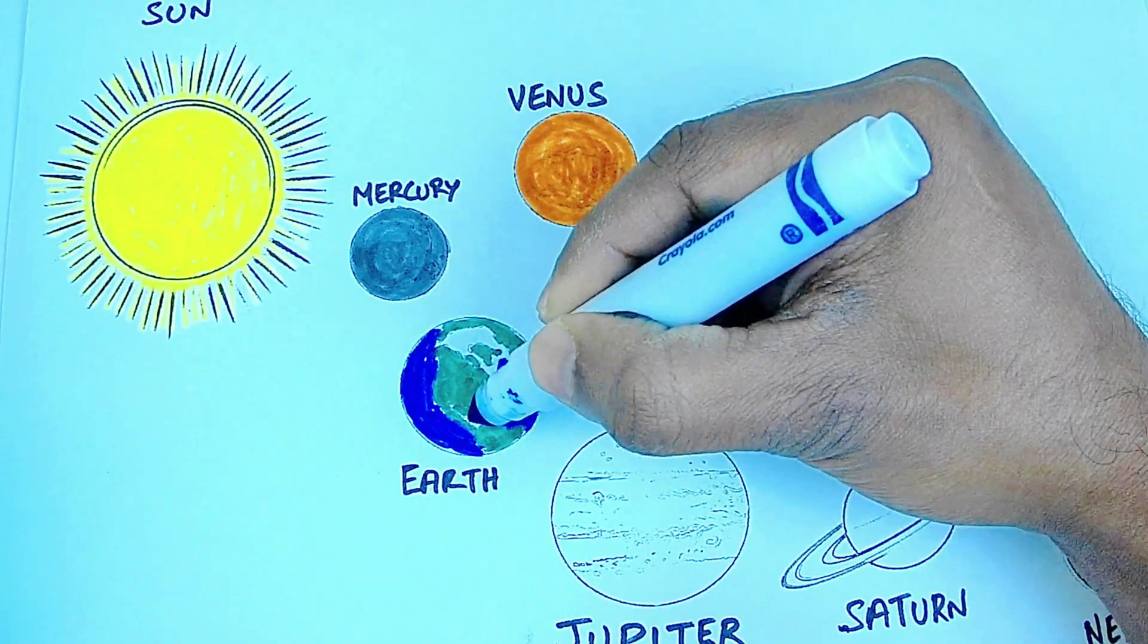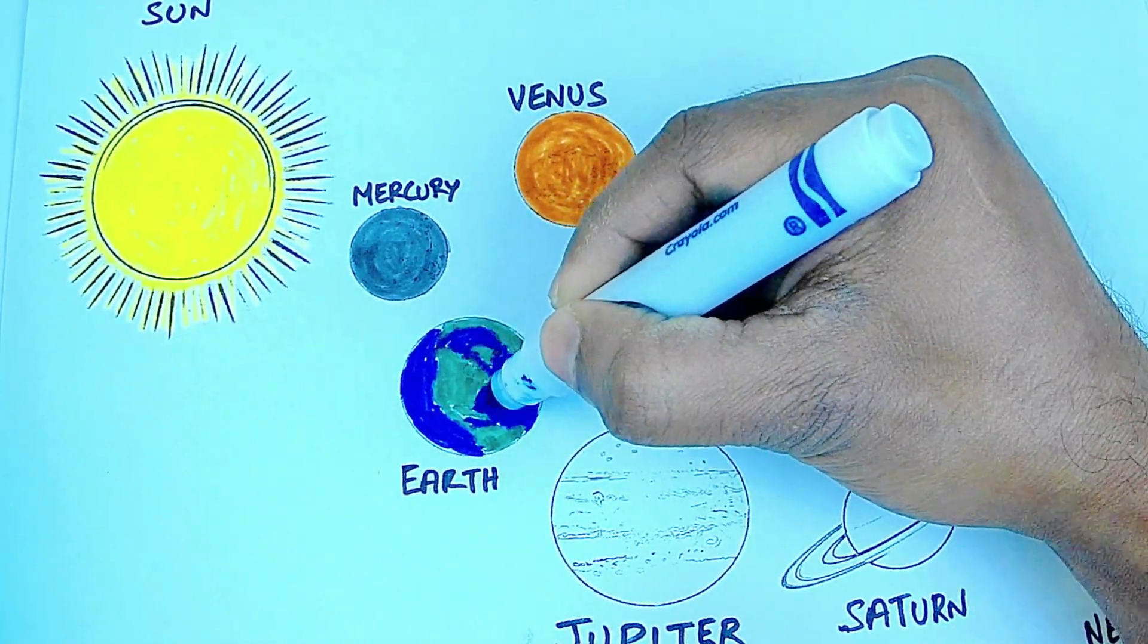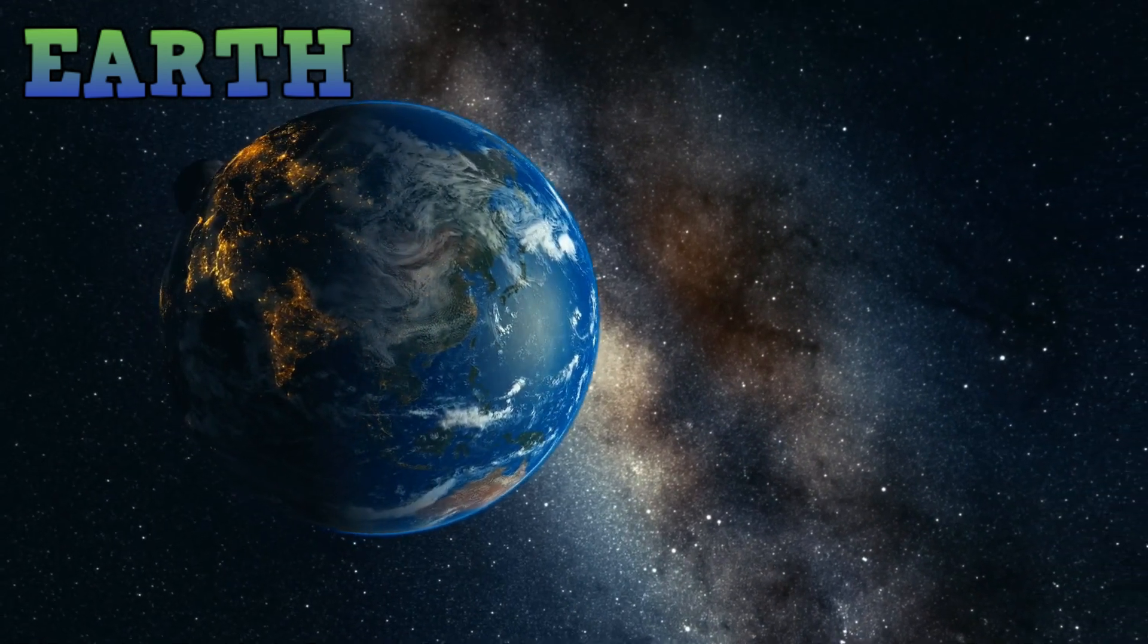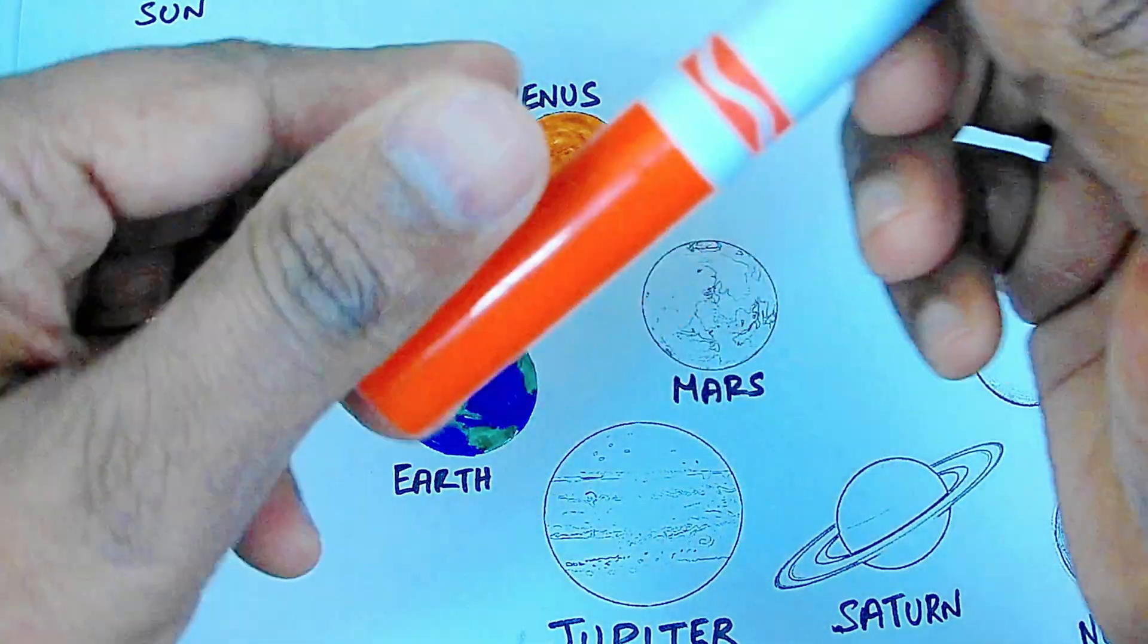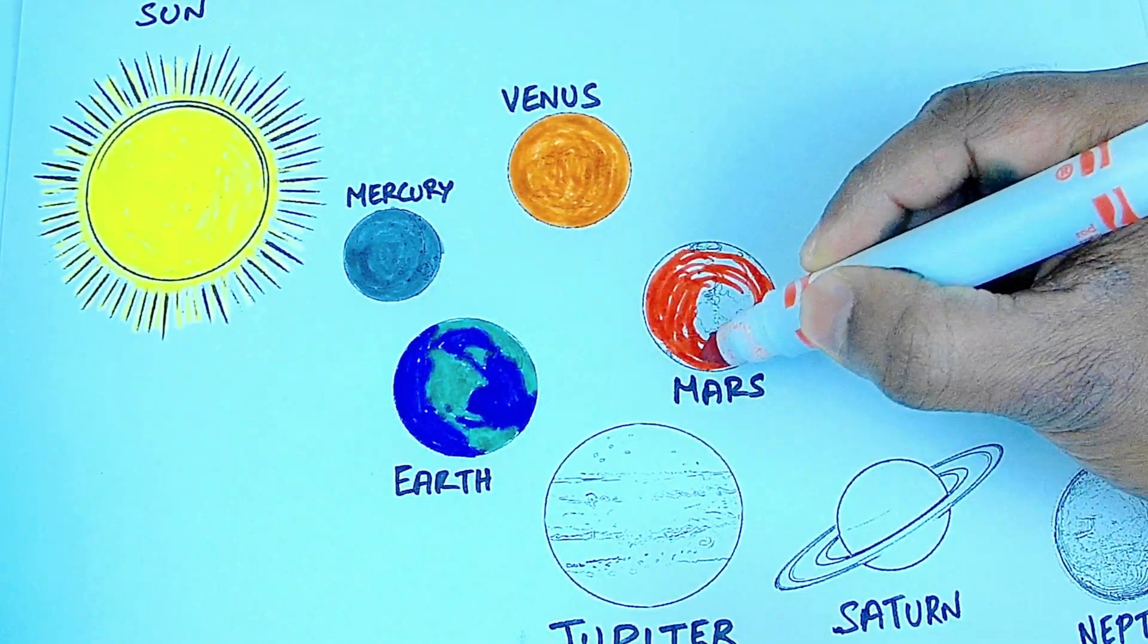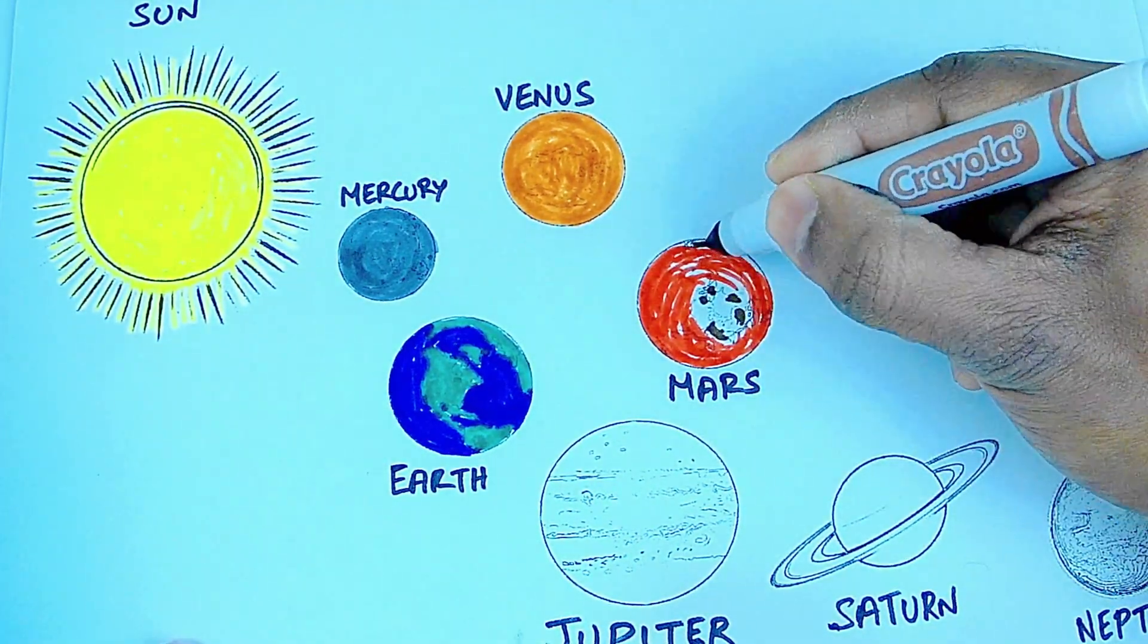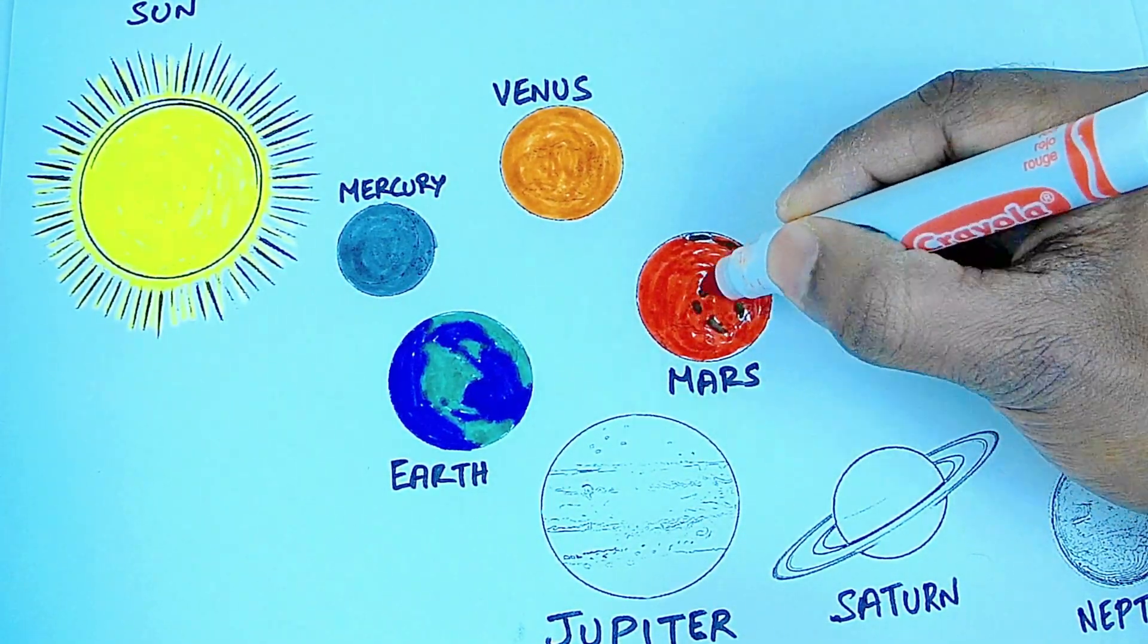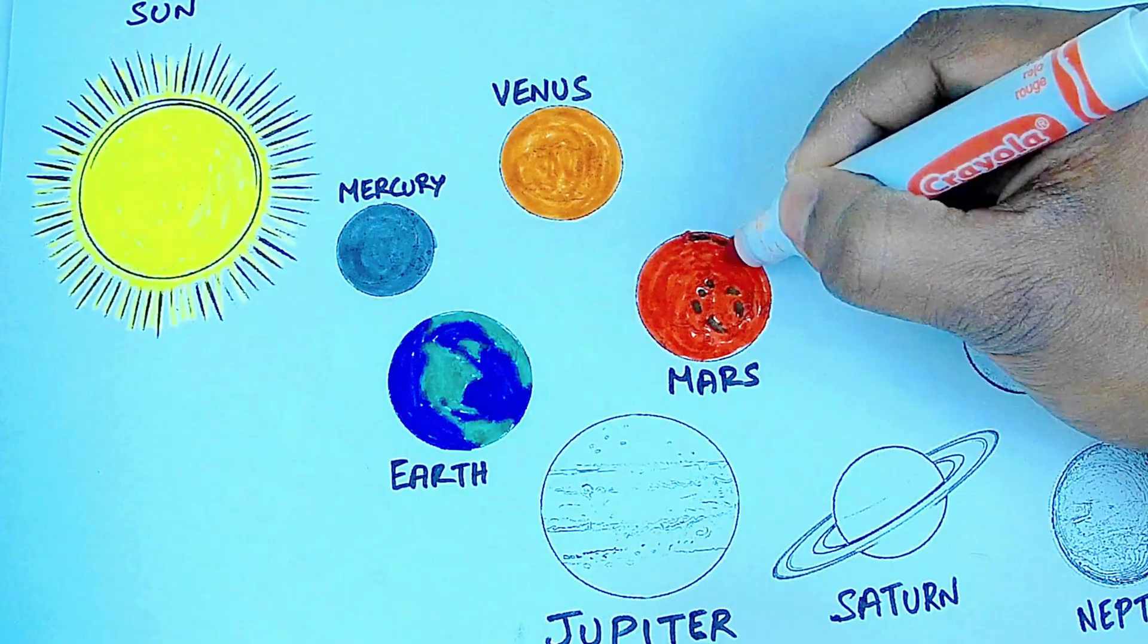Red color Mars. Mars is called the red planet. It is the fourth planet from the Sun. It has two moons.